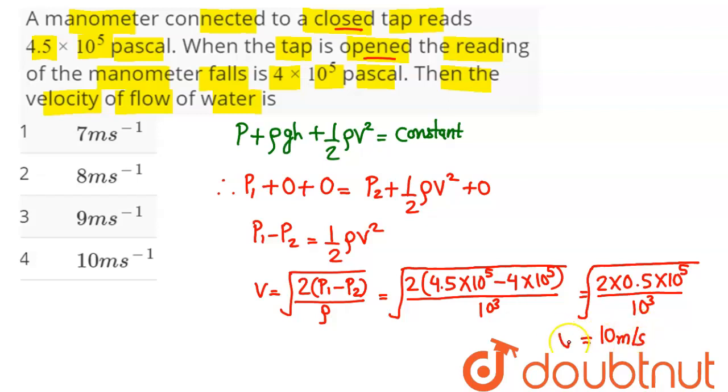So 10 meter per second is the velocity of the flowing water which is option number 4. Hence we have 4 as the correct answer.